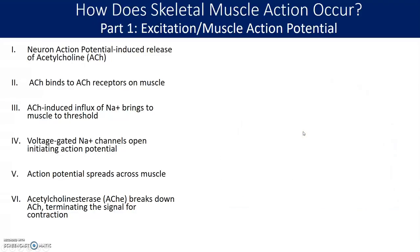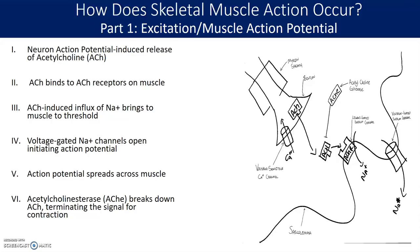Here's another illustration, a little more zoomed in. We have the nerve ending. Once the action potential reaches the end of the nerve, it stimulates voltage-sensitive calcium channels, which allows calcium to flow in. That calcium then in turn causes acetylcholine to be secreted from the nerve ending. The acetylcholine then gets into the synaptic cleft, where it binds onto the acetylcholine receptor on the top of the muscle cell, the sarcolemma.